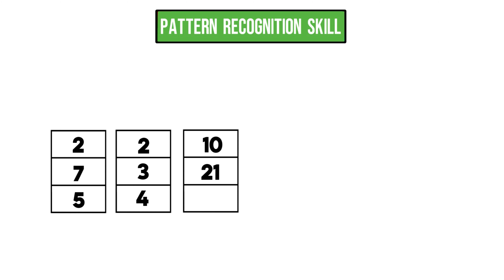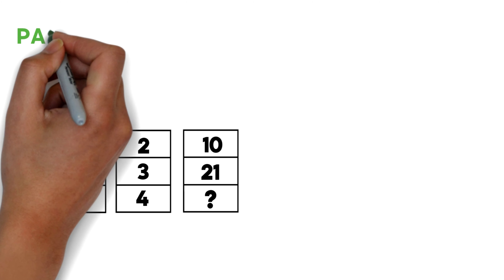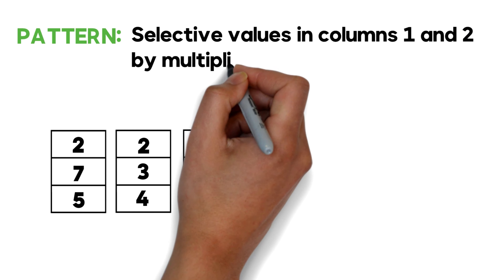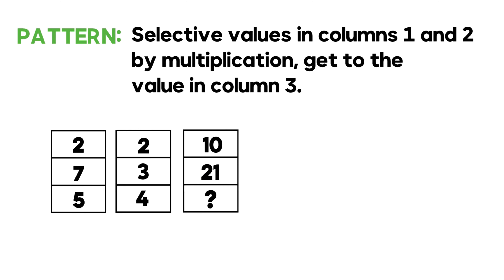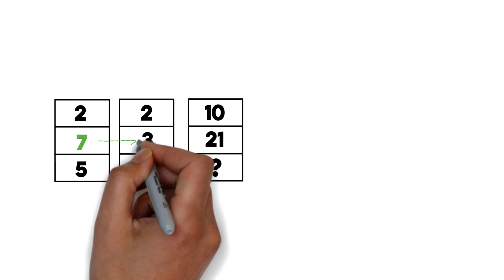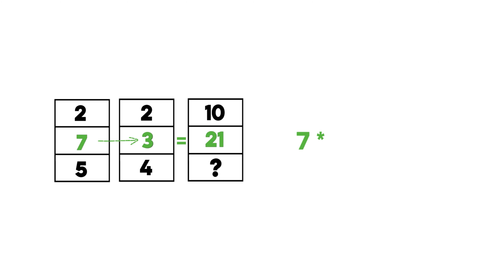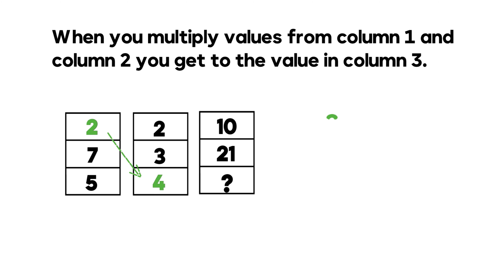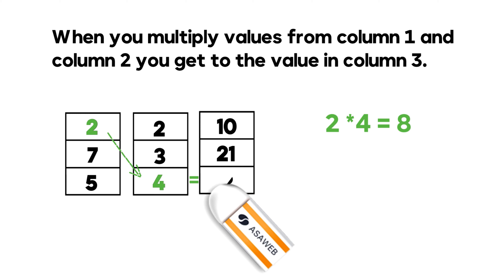The most important skill to solve these types of problems is pattern recognition. To recognize the pattern you need to look closely at each column. Values in columns one and two multiplied together give the value in column three. For example, 5 times 2 equals 10, and 7 times 3 equals 21. So the missing value is calculated by multiplying 2 by 4, which equals 8. The correct answer is choice A, 8.